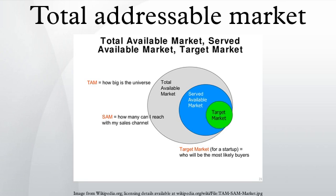The difference between TAM, SAM, and SOM: Total Addressable Market, or Total Available Market, is the total market demand for a product or service, calculated in annual revenue or unit sales if 100% of available markets is achieved. Serviceable Available Market is the portion of TAM targeted and served by your products or services. Serviceable Obtainable Market, or Share of Market, is the percentage of SAM which is realistically reached.